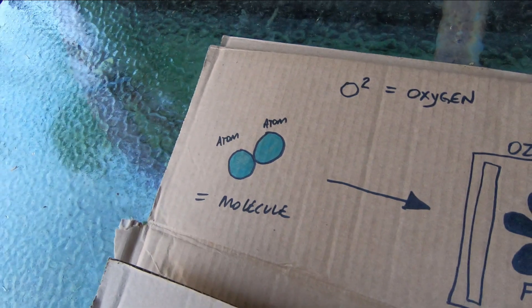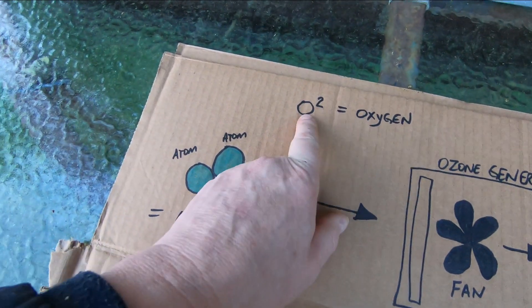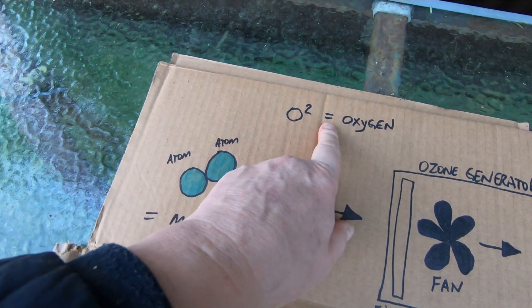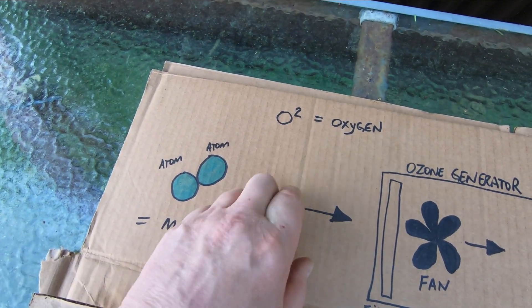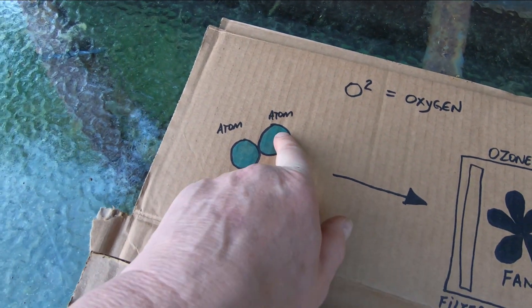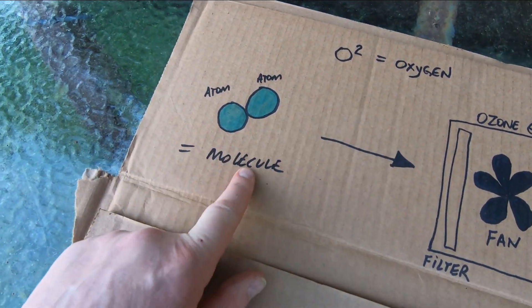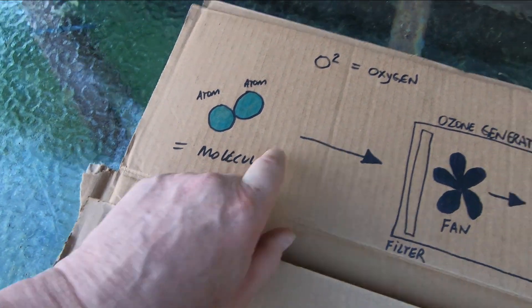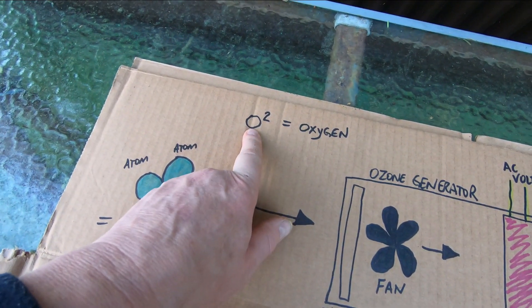The first thing we want to look at is oxygen. Oxygen is in the air we breathe, and it is formed by two atoms of oxygen combined into one molecule. That's a molecule of oxygen — O2.